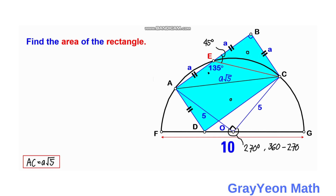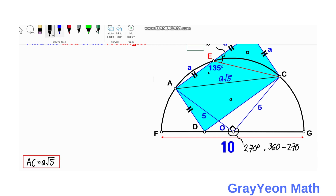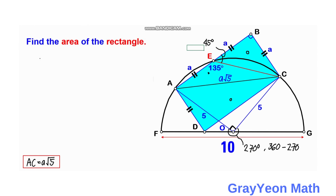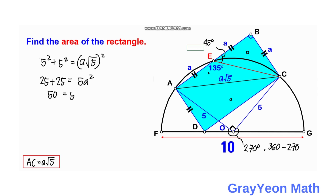Next, we focus on the isosceles right triangle COF. We have legs of 5 and 5, and the hypotenuse is a√5, so 5² plus 5² equals (a√5)². That gives us 25 plus 25 equals 5a², so 50 equals 5a². Dividing both sides by 5, we get a² equals 10, and therefore a equals the positive square root of 10.